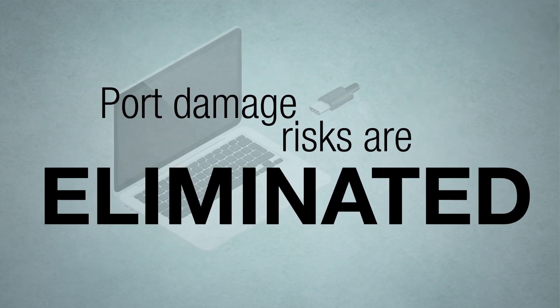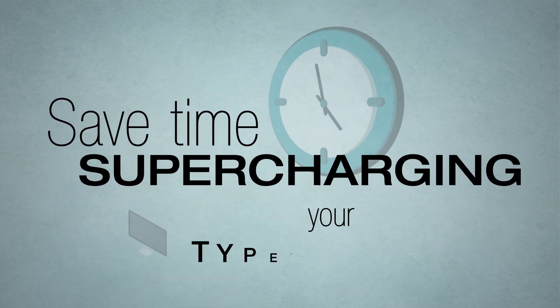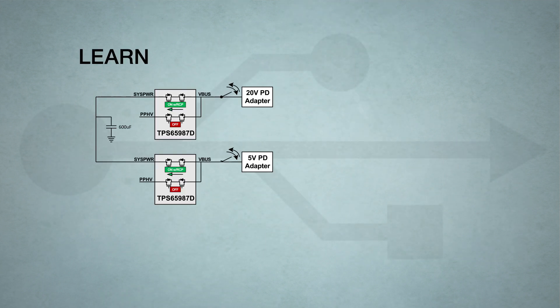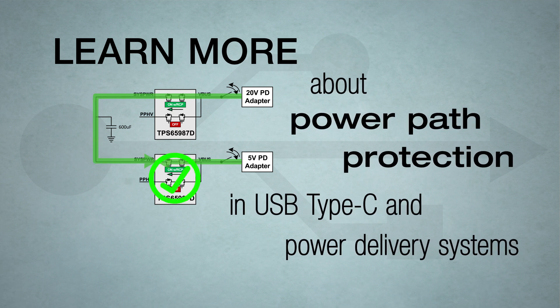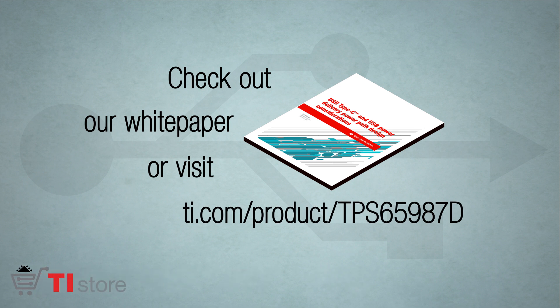RCP eliminates port damage risks. So instead of replacing busted components, you save time on supercharging your Type-C application. To learn more about power path protection in USB Type-C and power delivery systems, check out our white paper or visit TI.com.